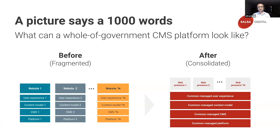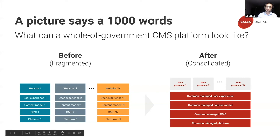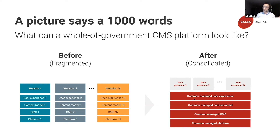What can a whole-of-government content management system platform look like? Imagine multiple sites, each on their own hosting infrastructure including security protection and caching, their own CMS, their own content models, and their own user experiences — not to mention their own separate patching and maintenance contracts. Multiply that by 50, 100, or 500 times: what a fragmented mess. Now imagine a common platform — including hosting, security, and caching — a common managed CMS, a common content model, and a common managed user experience, with all 100, 200, or 500 web presences served upon it. What consolidated bliss!